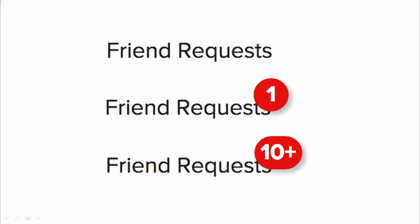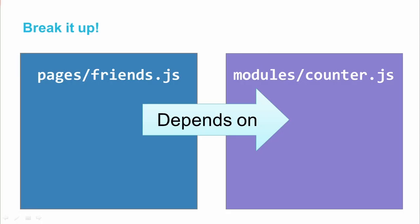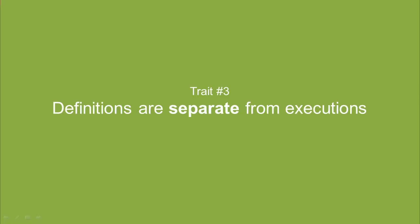Let's look at another example. Let's say you're building a nice little counter, and it works really well on a friend request tab, and you want to reuse it in other contexts. The easiest thing you can do is just break it up into two separate files. In your counter file, you would have the definition — basically a class or a function. And then in your friends.js, you would import that file and attach it to the DOM and do whatever you need to do. So trait number three is: definitions are separate from executions, and this helps make sure your code is reusable. And a nice bonus is that your code is now much easier to test — and you guys are all unit testing your JavaScript, right?